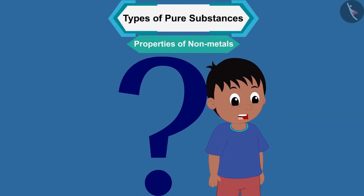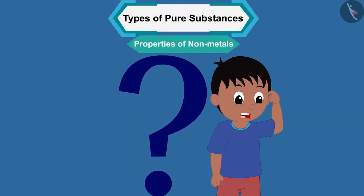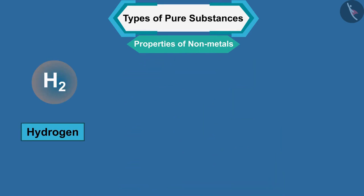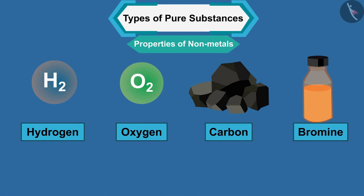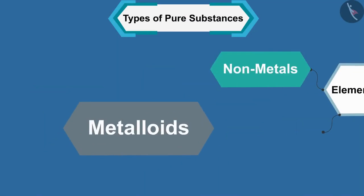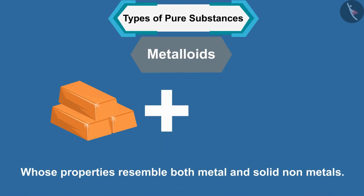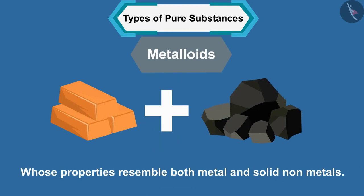Four, they are not sonorous. Five, they are not malleable. Can you think of some examples? Examples of non-metals are hydrogen, oxygen, carbon, bromine, etc.